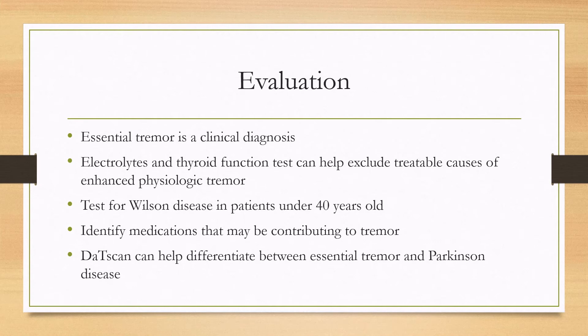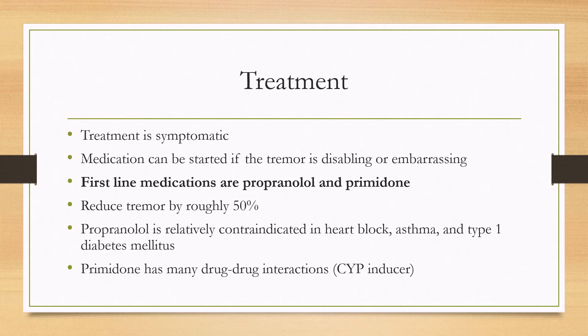Going through the medications list to identify medications that have tremor as a side effect can also help in alleviating these tremors. The DAT scan is not routinely done to differentiate essential tremor from Parkinson's tremor, but it can be done — it will be normal in essential tremor and abnormal in Parkinson's disease. The treatment of essential tremor is largely symptomatic and there are no disease-modifying agents.